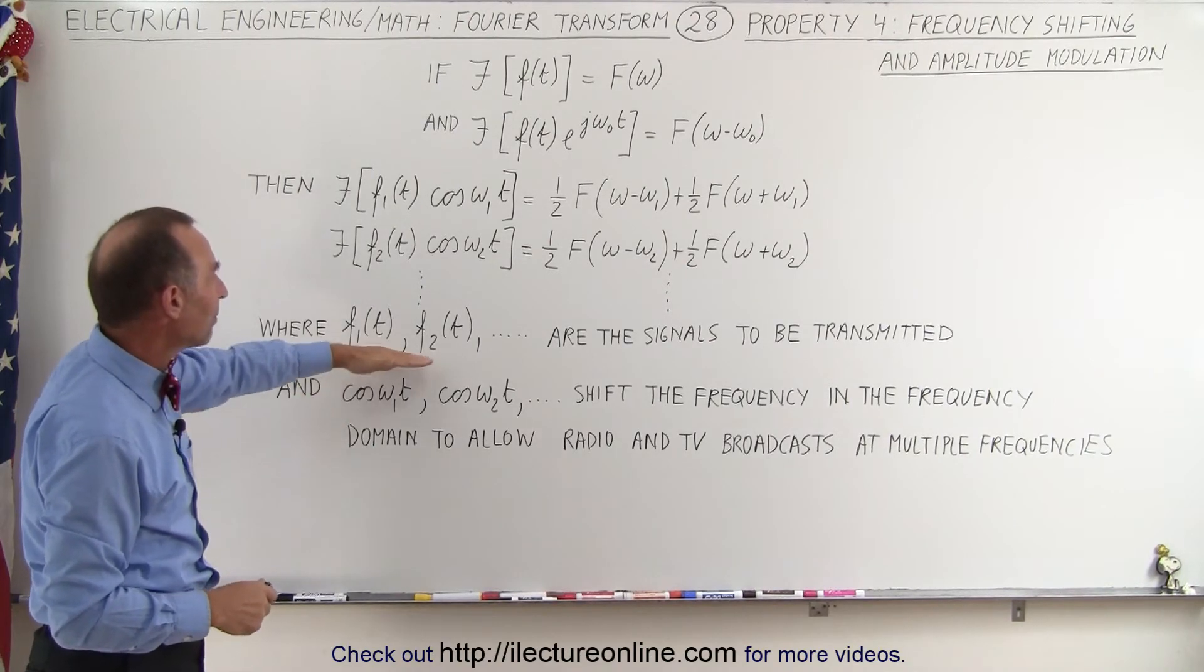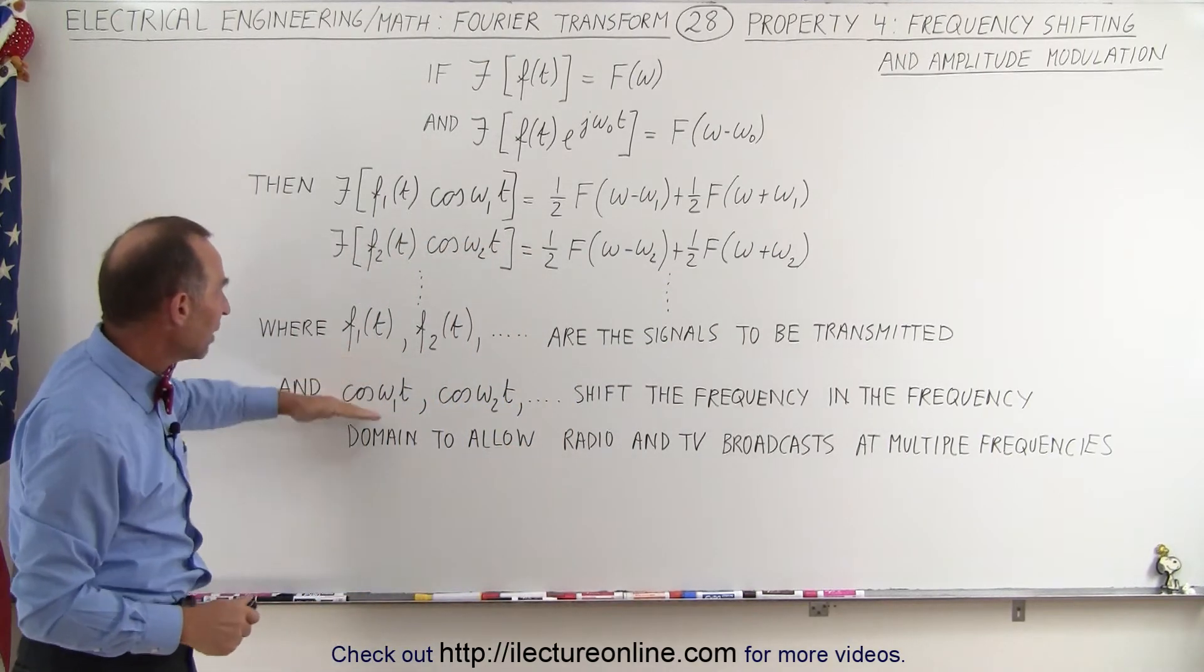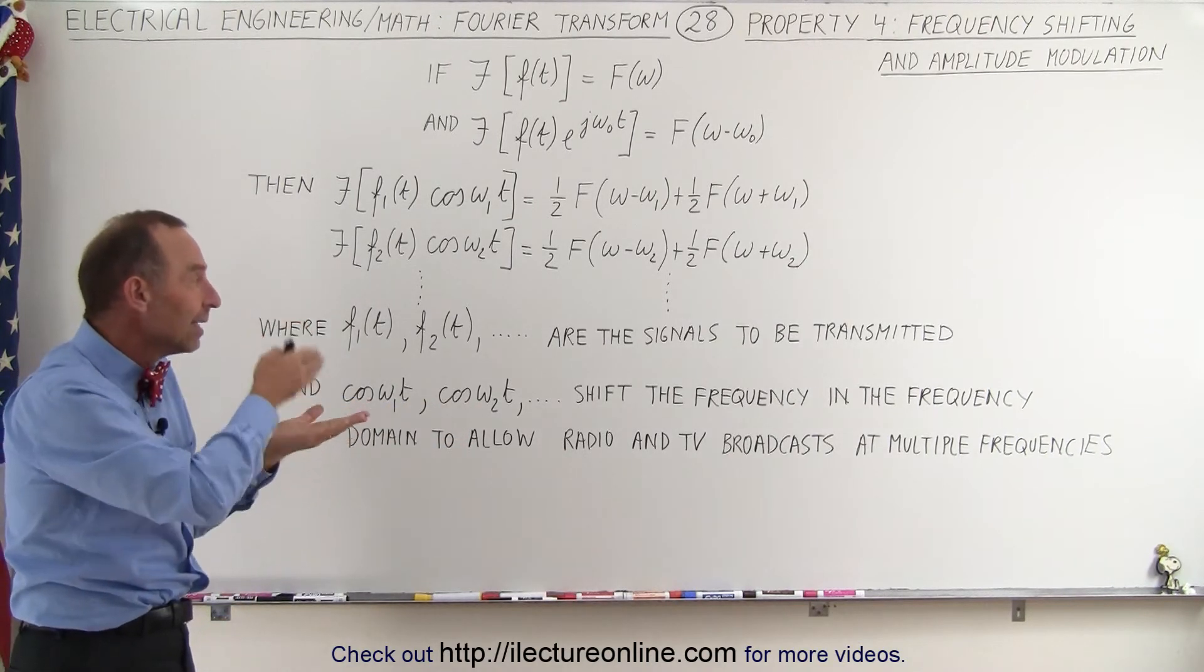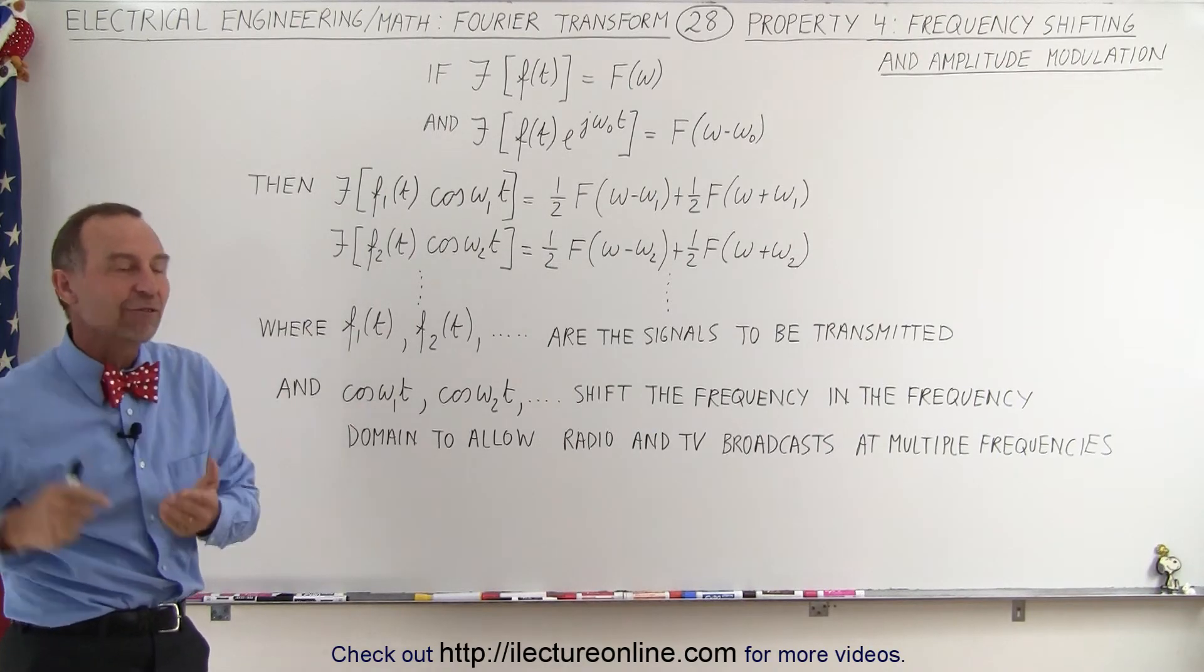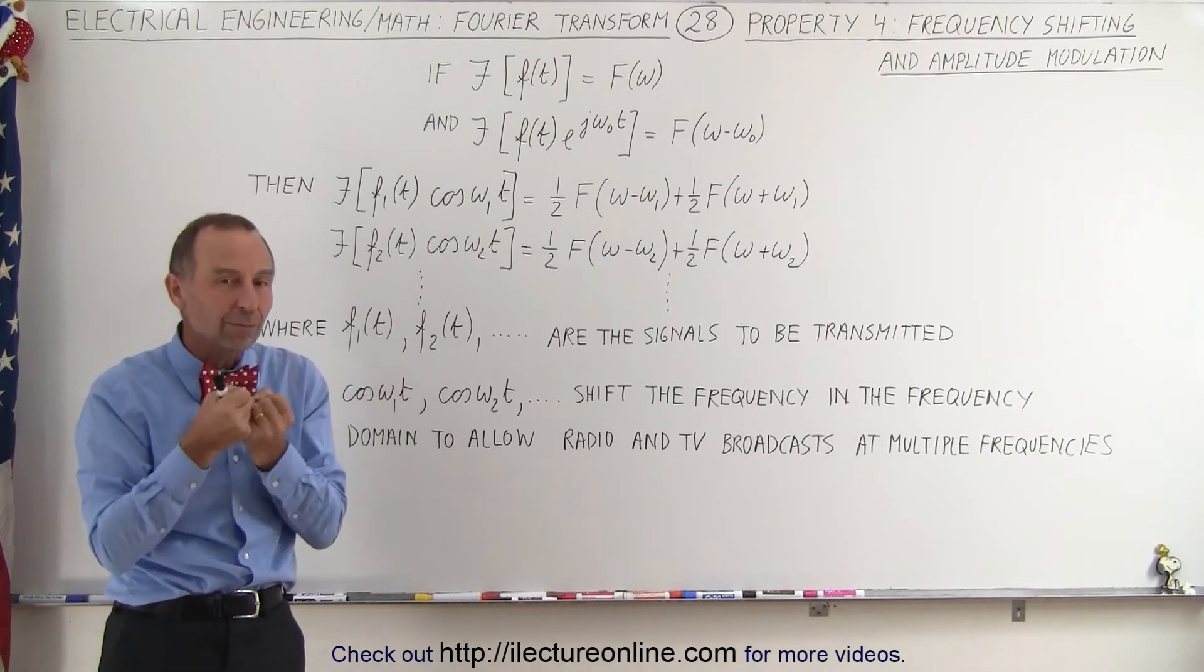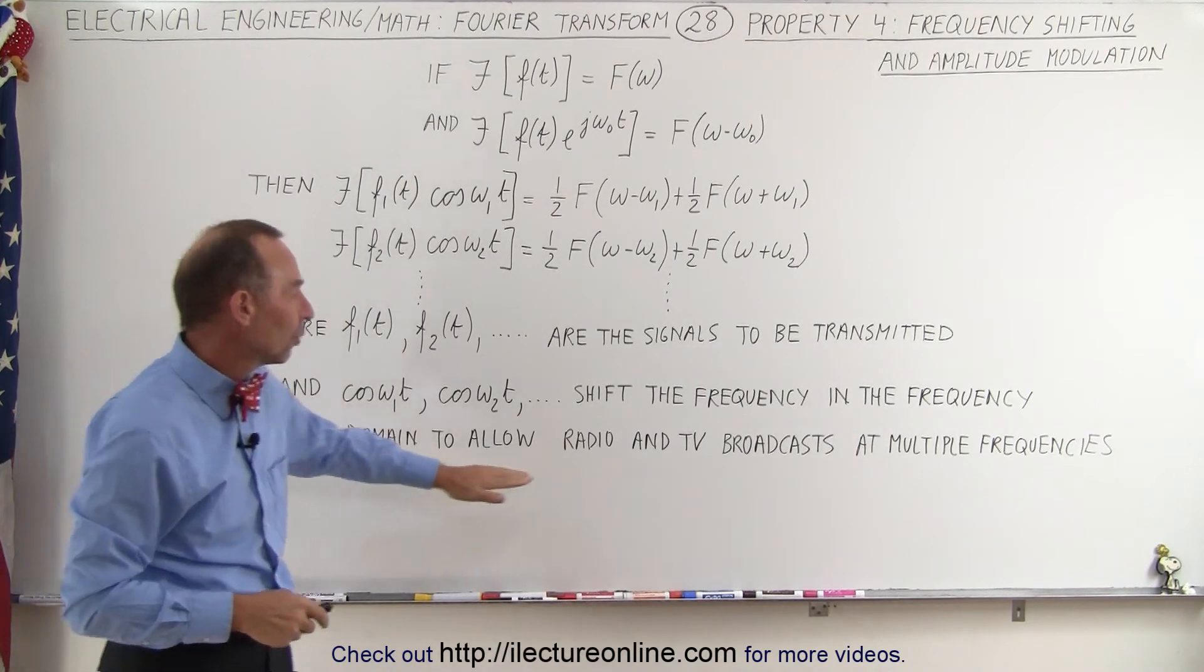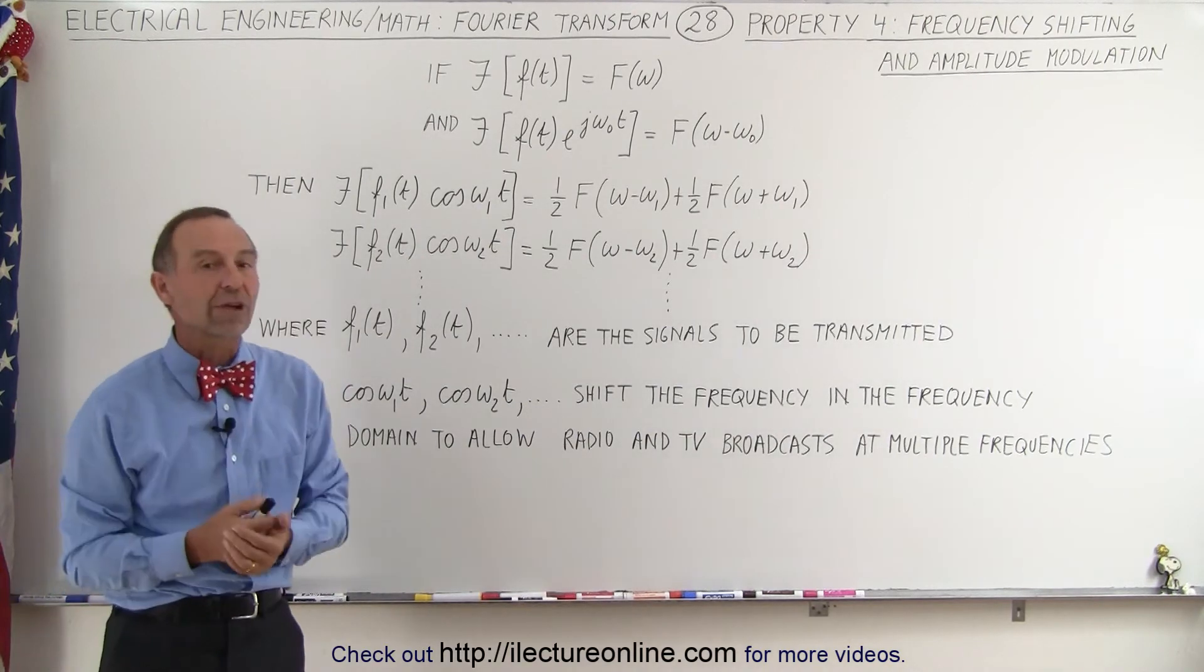Basically, if these functions in the time domain are signals to be transmitted, then if we multiply each of the functions by a different cosine with a different frequency offset, then we can see that in the frequency domain, these signals to be transmitted will now be transmitted at different frequencies and not interfere with each other. And then with the correct electronics, we then pull out the frequency that we want to tune into or listen to. So the domain then allows the radio and TV broadcast at multiple frequencies, and that's what we're trying to do.